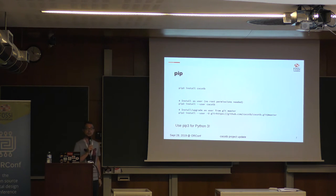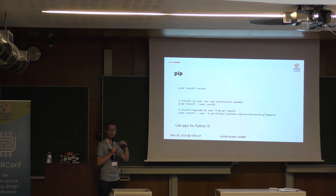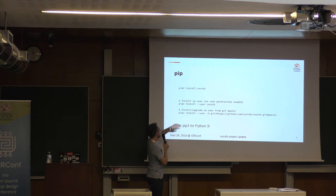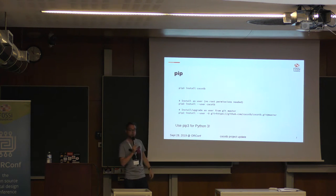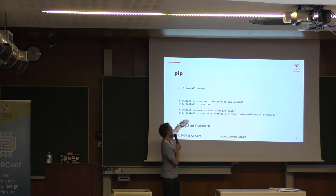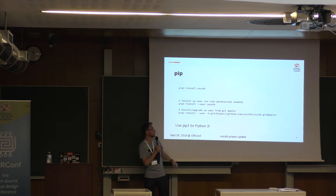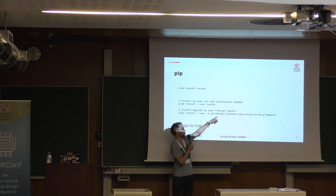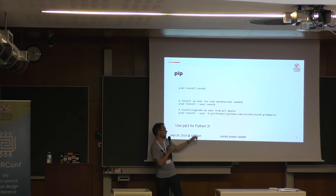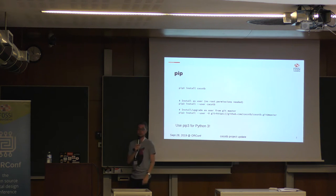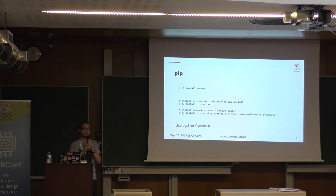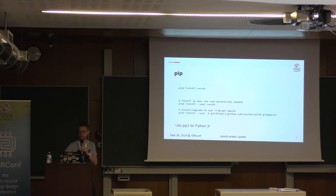Of course, this is Python, so there is no single easy way to install a package — you always have a thousand options. pip could be your Python 2 or Python 3 version; use pip3 typically for the Python 3 one. You can install CocoTB as a normal user without root by passing the user flag, though on some distributions you don't need that. And you can install CocoTB directly from the Git master using the GitHub URL, which gives you the ability to try out new things right away.